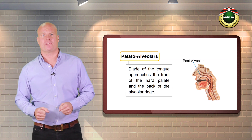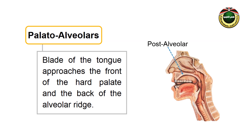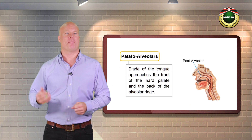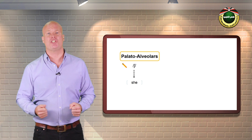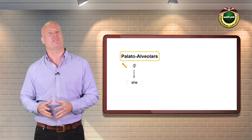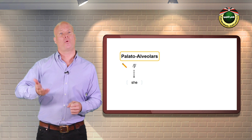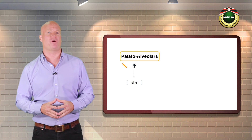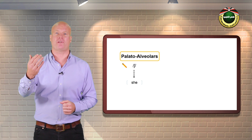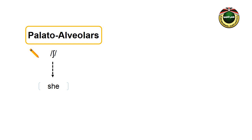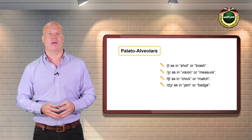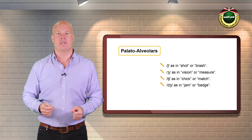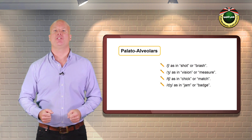Palato-alveolar sounds are formed when the blade of the tongue approaches the front of the hard palate and the back of the alveolar ridge. Try to produce the first sound in she. Notice how the blade of the tongue is raised toward the point where the back of the alveolar ridge meets the front of the hard palate, as illustrated in the diagram. English palato-alveolar sounds are sh, zh, ch, and j.